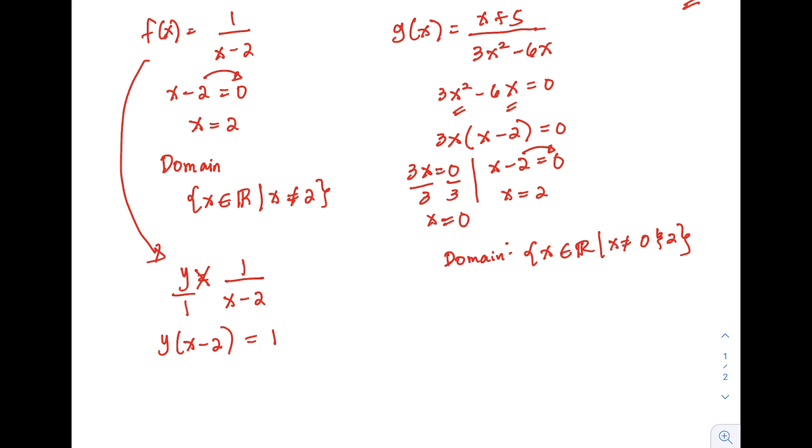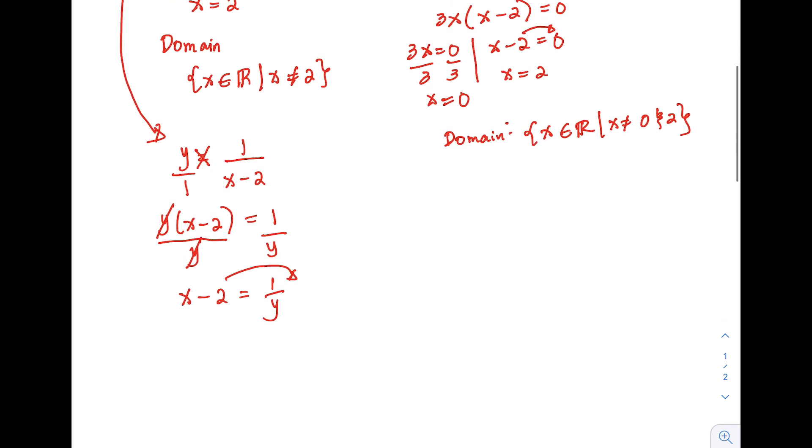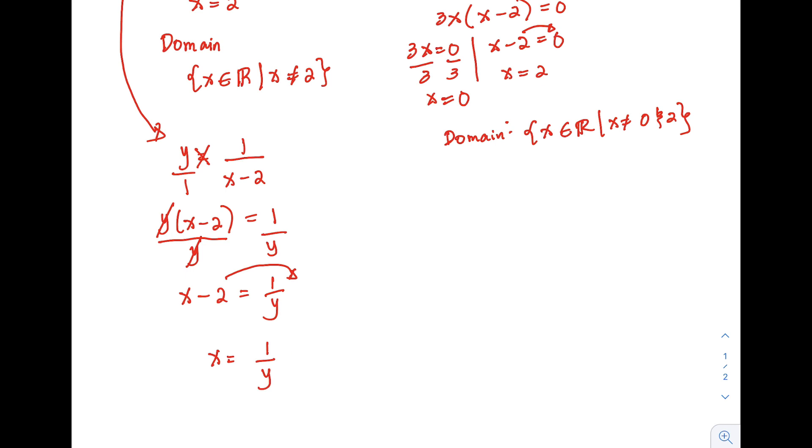Then after that, solving for x, divide both sides of the equation by y. So we can cancel that. Then we have x minus 2 equals 1 over y. Then solving for x, transpose the negative 2. We have x equals 1 over y plus positive 2. So when we rewrite it like that, we can identify the range.